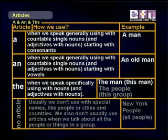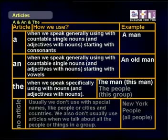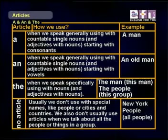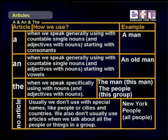Our next article is AN. We use AN when we speak generally with countable single nouns and adjectives with nouns starting with vowels. For example, an old man. We use the article THE when we speak specifically using nouns and adjectives with nouns. For example, the man — this one we're talking about. Or the people, when we're talking about this specific group.